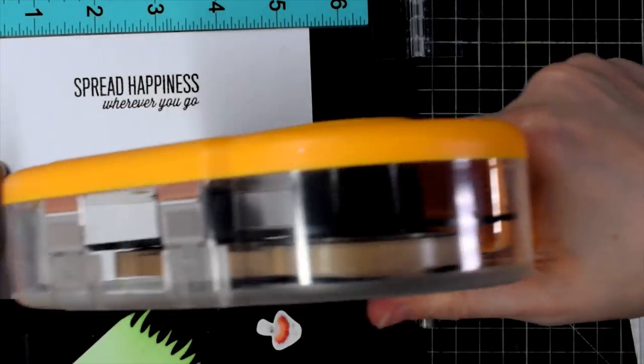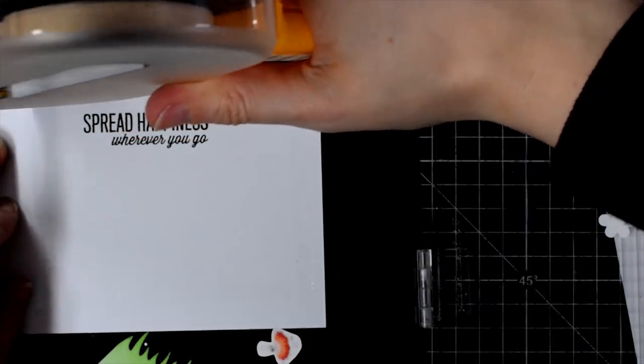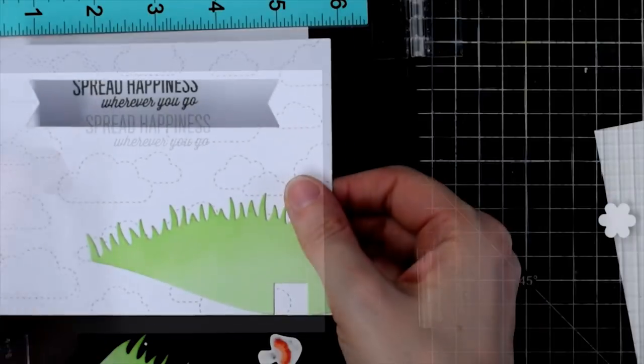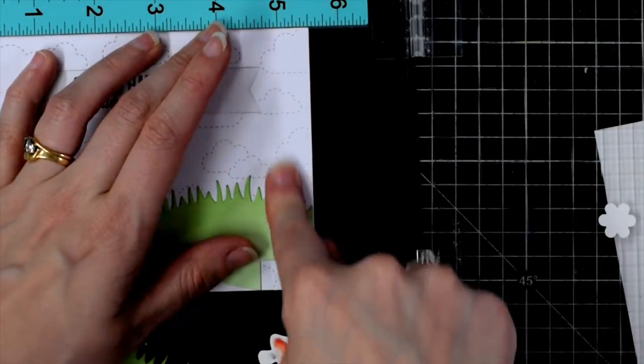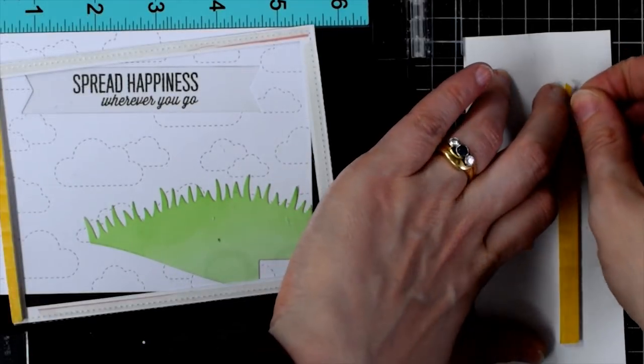So now let's add a little bit of my ATG gun around my sentiment and stick down this front panel using my MISTI to make sure that it's perfectly aligned.